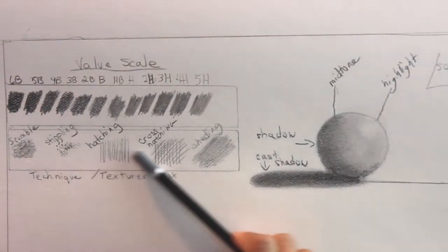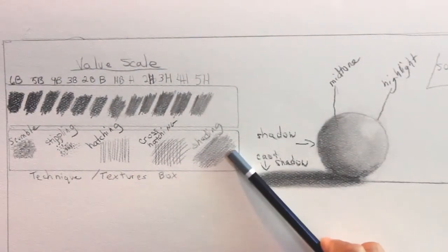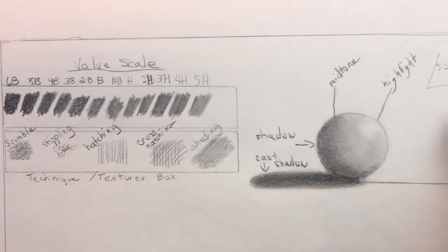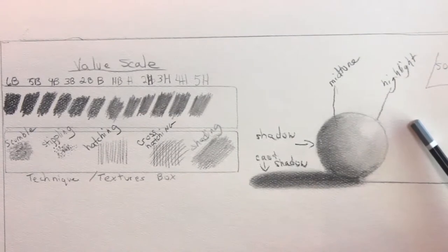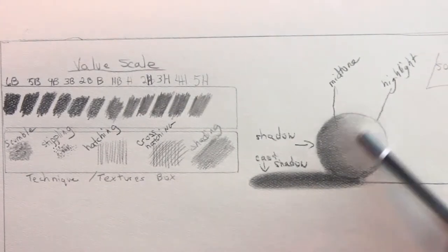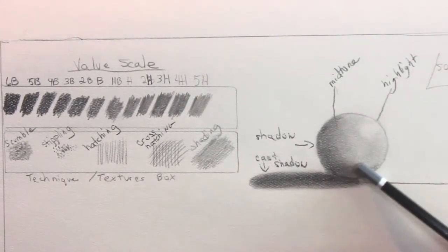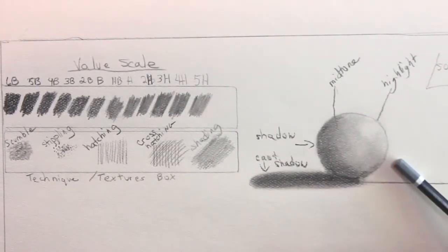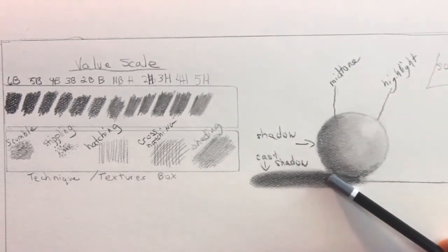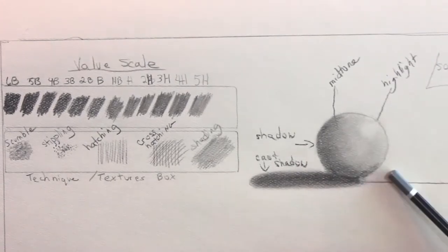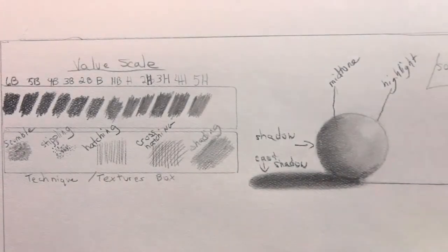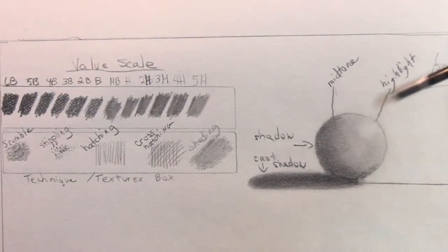Now I want to go back to textures. Here we use a shading texture and we got it nice and unified by blending it together, light to dark. We have a sphere and the light source is coming from here.